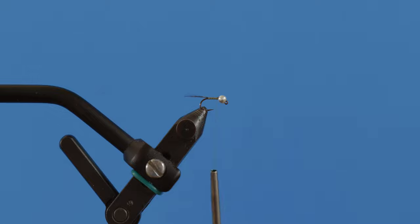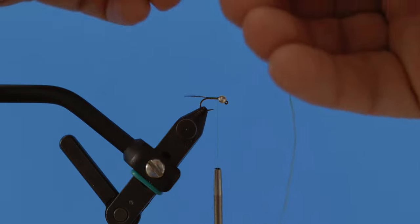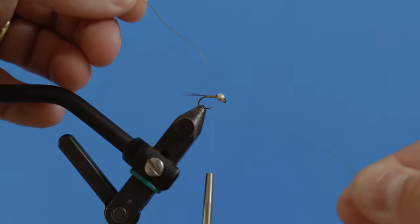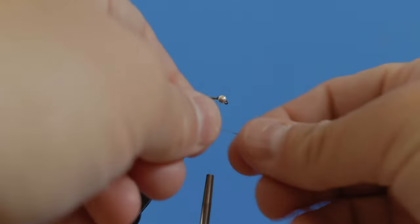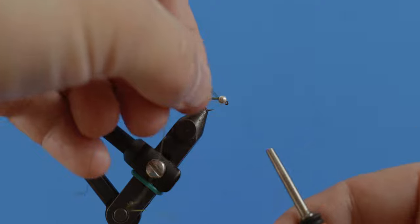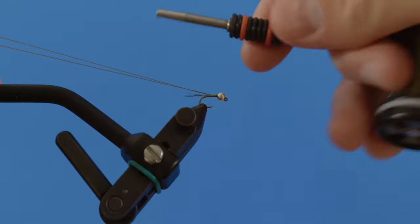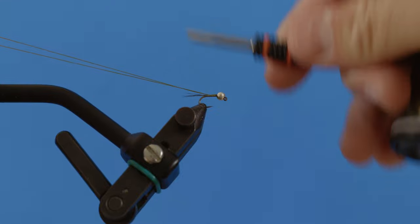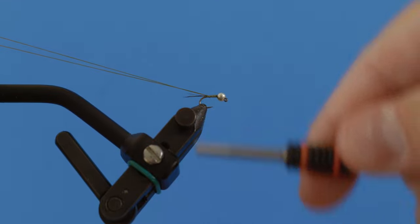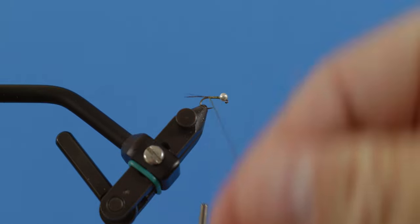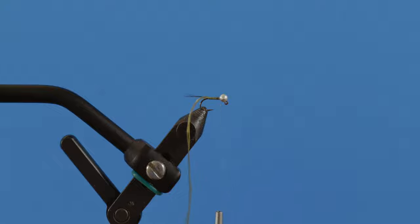Now the next thing I'm going to do is I have a piece of thread here that I've cut off. It's a piece of olive ultra thread, 140 denier. I'm just going to double this over onto the top like this and push this all the way back to where the tail starts. Move my thread forward, and we're going to create the body out of these two strands of thread.